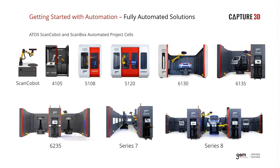Moving into fully automated solutions, we have multiple scan box models, all doing the same thing: acquiring high quality data and inspecting a part as fast as possible without compromising results. The only difference between the cells is the size of the part and application. For a body in white, you'd use a Series 8; for small injection molded parts, a 4105 or cobot works. The naming convention tells you the working volume: the 4105 fits parts up to 500mm, the 5108 up to 800mm, the 5120 up to 2 meters, the 6130 up to 3 meters, the 6135 up to 3.5 meters, and so on.